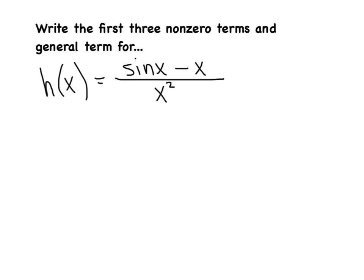Let's put that into practice. I want you to write the first three non-zero terms and the general term for the function h of x equals the quantity sine of x minus x, divided by x squared. First, ask yourself: what are you taking the sine of? If there are no parentheses, the rule is you're only taking the sine of the first term — there would be an invisible set of parentheses around just x. Your task is to import the Maclaurin series for sine of x, substitute it in, subtract x, combine like terms, divide everything by x squared, and see what the finished product is. Good luck, and see you tomorrow.